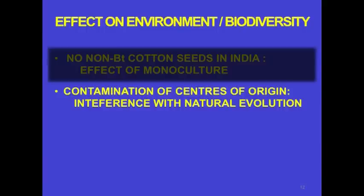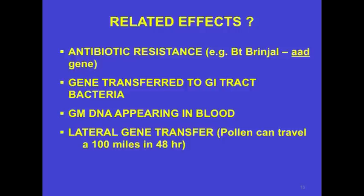There is contamination of centers of origin, as happened in Mexico, and interference with natural evolution when BT crops are present. There is also antibiotic resistance—the BT gene can be transferred to GI tract bacteria. The genetically modified DNA coding for the BT gene is known to appear in the blood of animals. And later gene transfer can occur to completely unrelated plants; pollen can travel about 100 miles in 48 hours via insects.